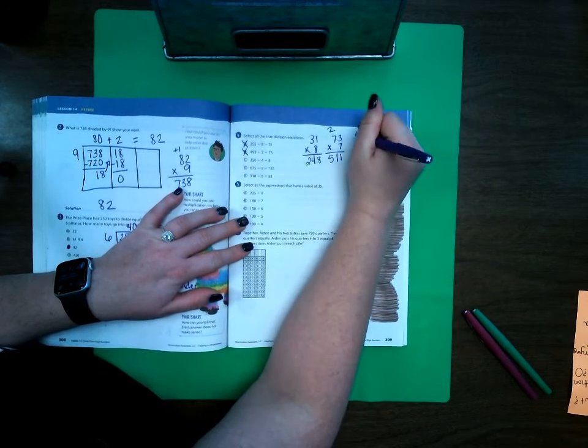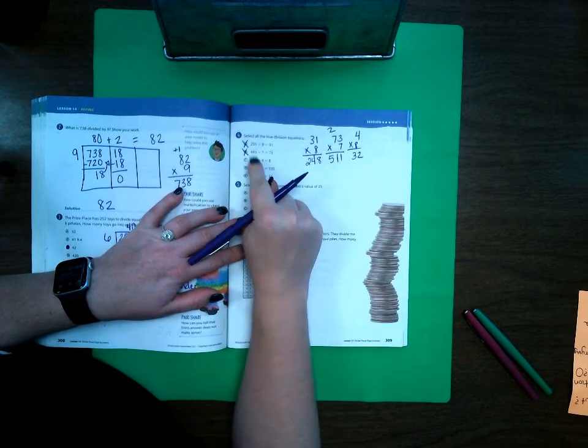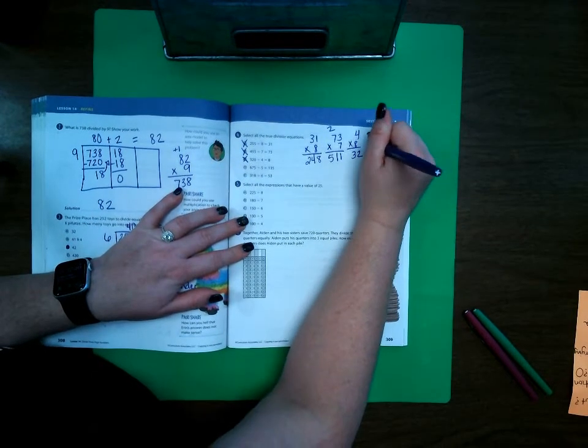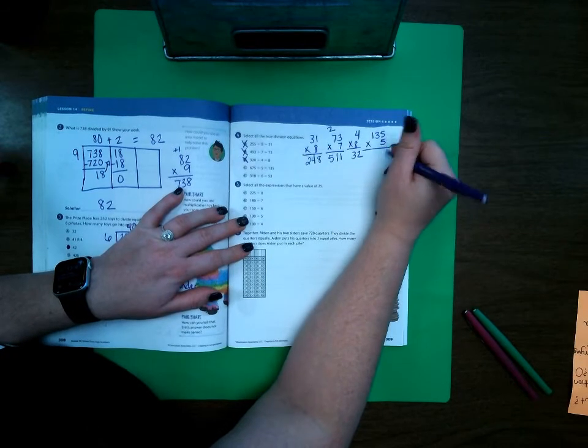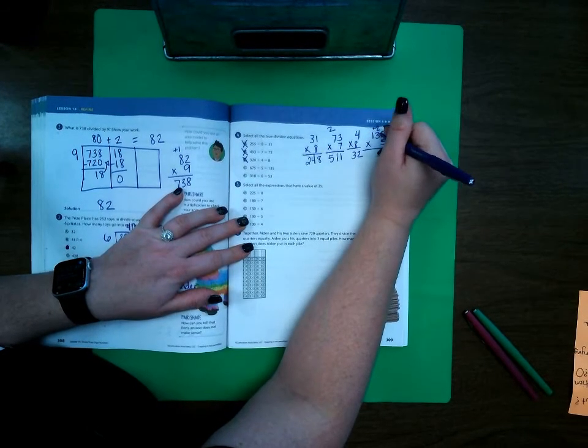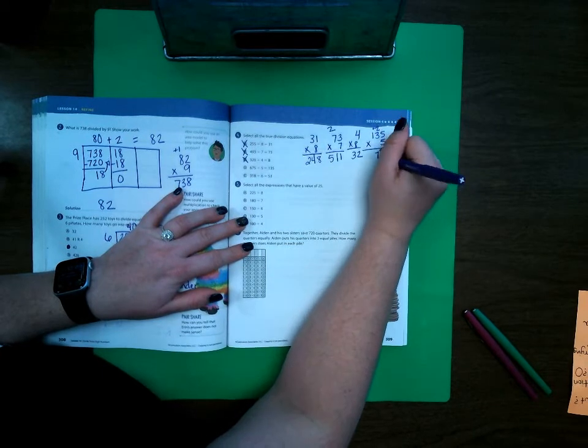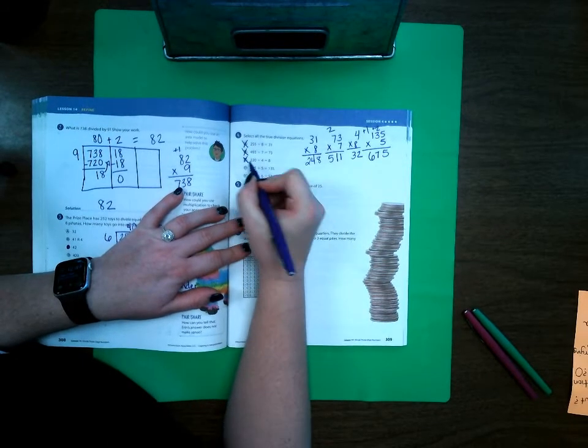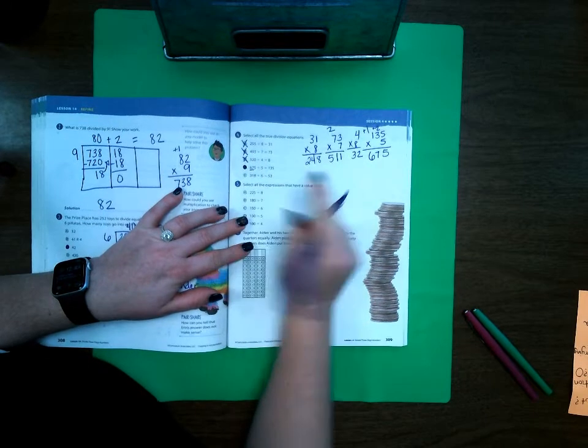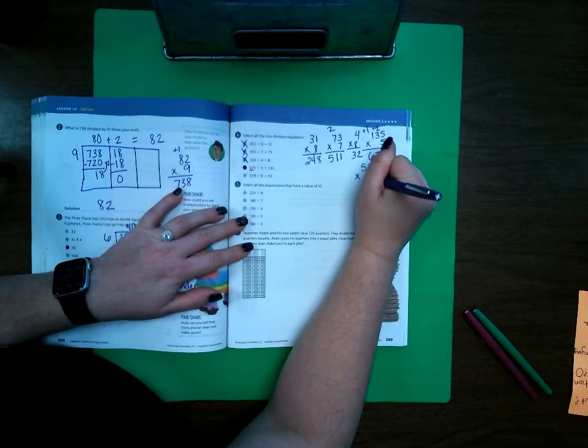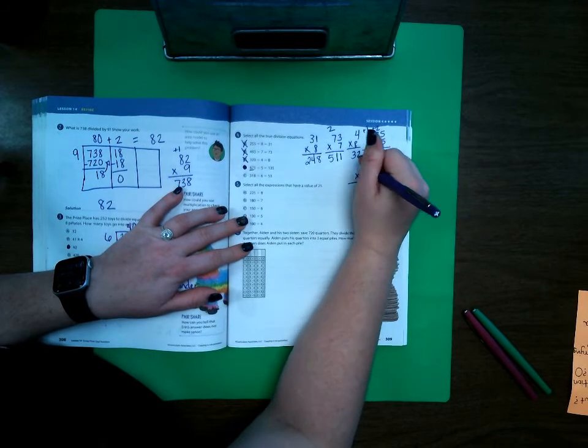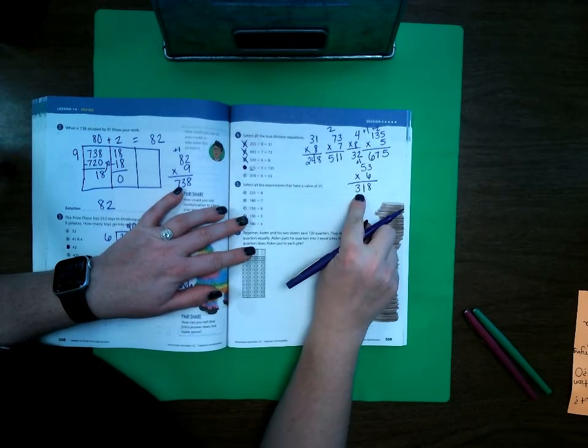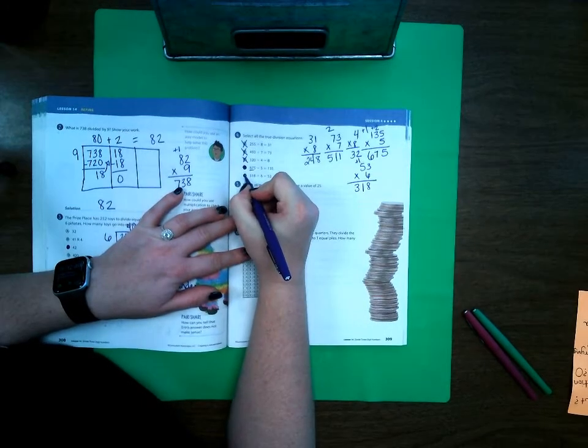OK 493, now 4 times 8 is 32, that's not going to work. 135 times 5. 5 times 5 is 25, 5 times 3 is 15 plus 2 more, 16, 17. 5 times 1 is 5 plus 1 is 6, 675. And look that's what I have right here so D is correct. And now our last one, 53 times 6. 6 times 3 is 18, 6 times 5 is 30 plus 1 more is 31, 318. And that's what I have over here so E is correct.